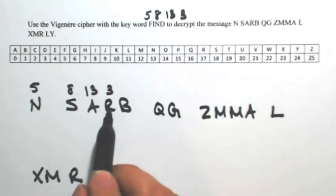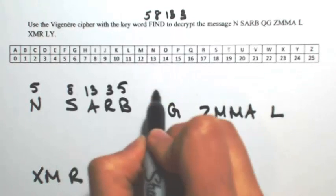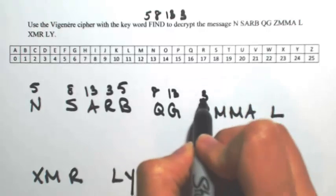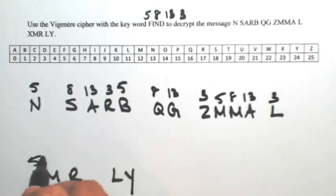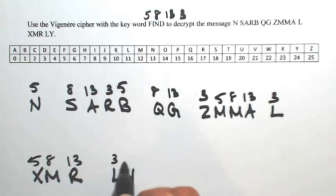As you go through, once you run out of letters, just start again. So 5, 8, 13, 3, repeating the pattern through the rest of the message.